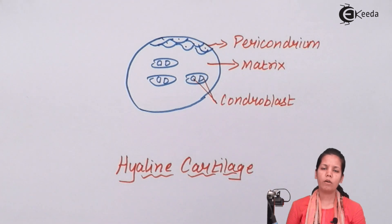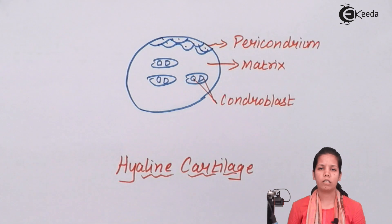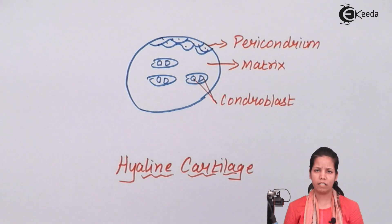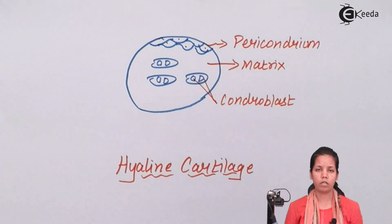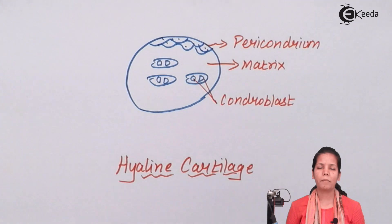I hope students we are clear about hyaline cartilage — about its structure, its function, what it does, how it works, and why it is termed the weakest cartilage. I hope we are very clear with this concept. Thank you.